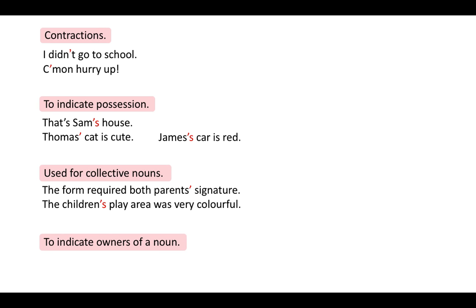A semicolon can also be used in a list when items in the list are long. For example: 'I have been on holiday to Istanbul, Turkey; Rome, Italy; Athens, Greece; and Paris, France.'